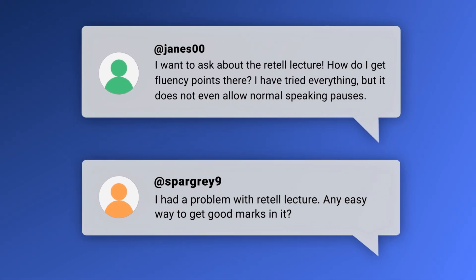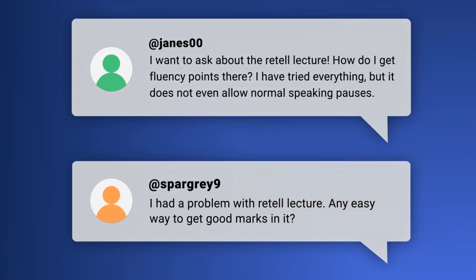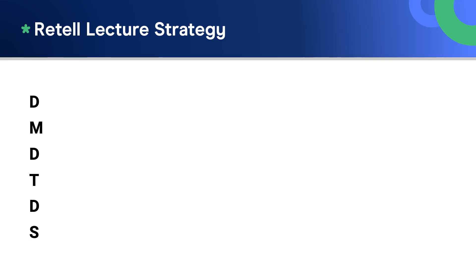Here are two questions — both about getting a high score in the retell lecture task. The first question asks specifically about improving fluency. Fluency takes practice. Listen to model answers and read along with the speaker to imitate the rhythm and length of the response. A strategy you can use is to write the letters D-M-D-T-D-S on a page. Then, while listening, write some key words the speaker uses as they tell their lecture. You need about six phrases.